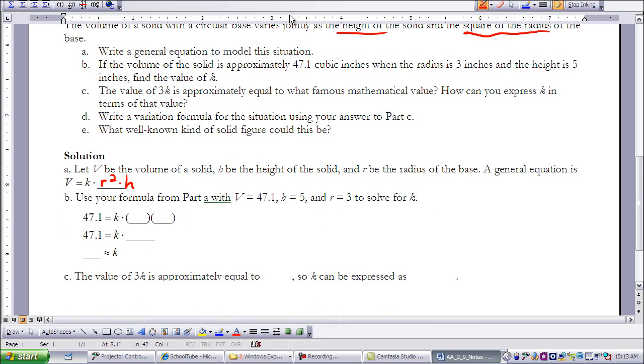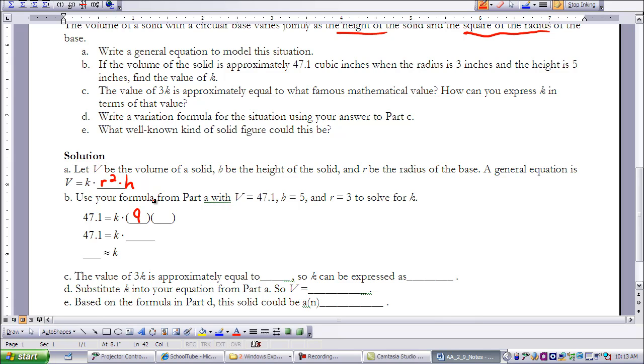So now we're going to use our formula from part A and use the values that were given in our problem for K. So in place of R squared, we're going to put 3 squared is 9, and our H is 5. We know that that is 45.